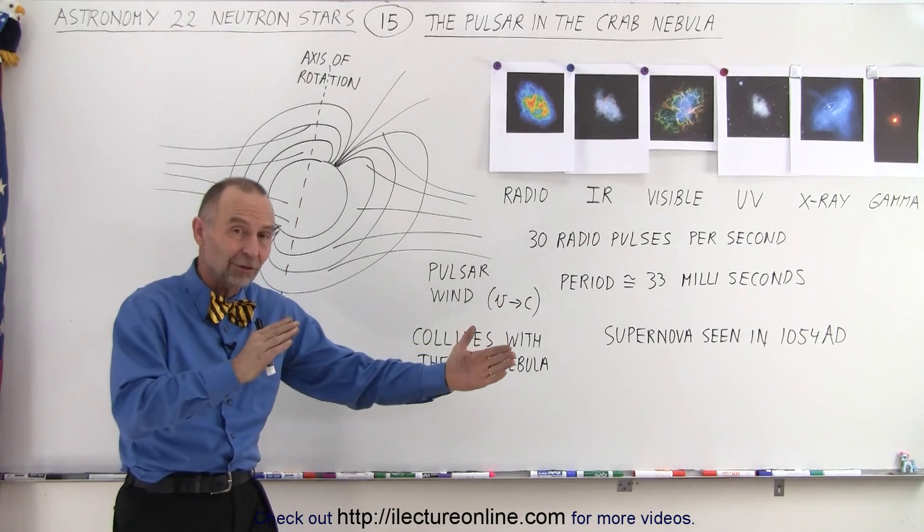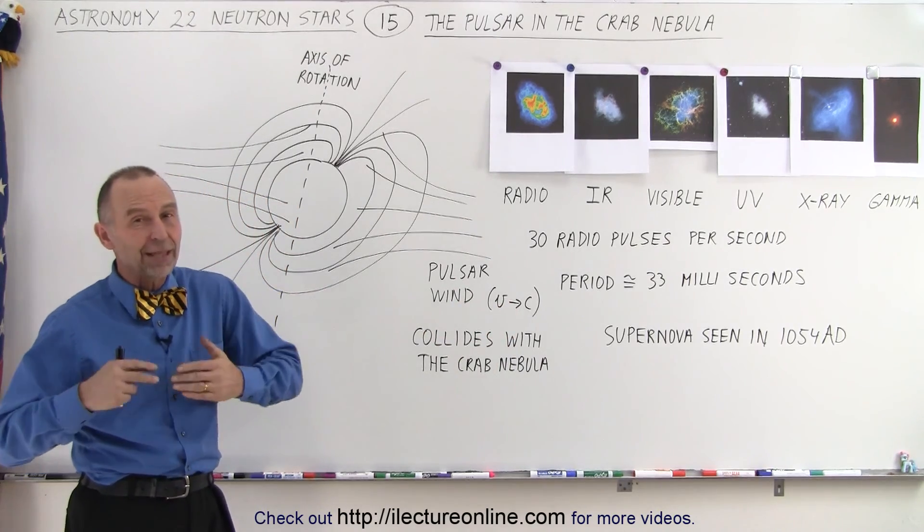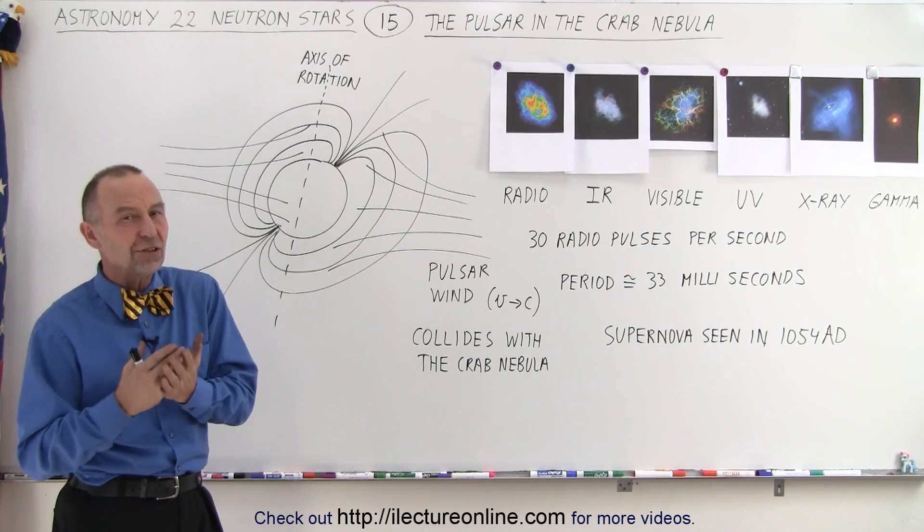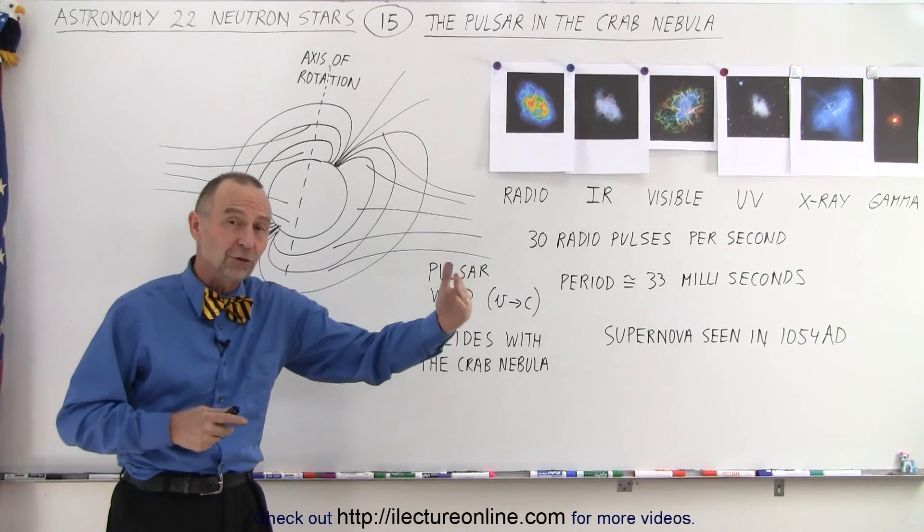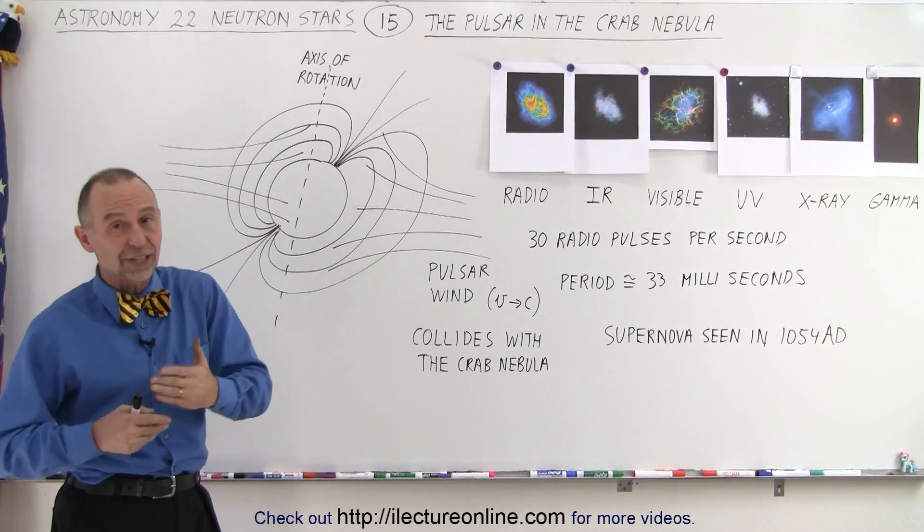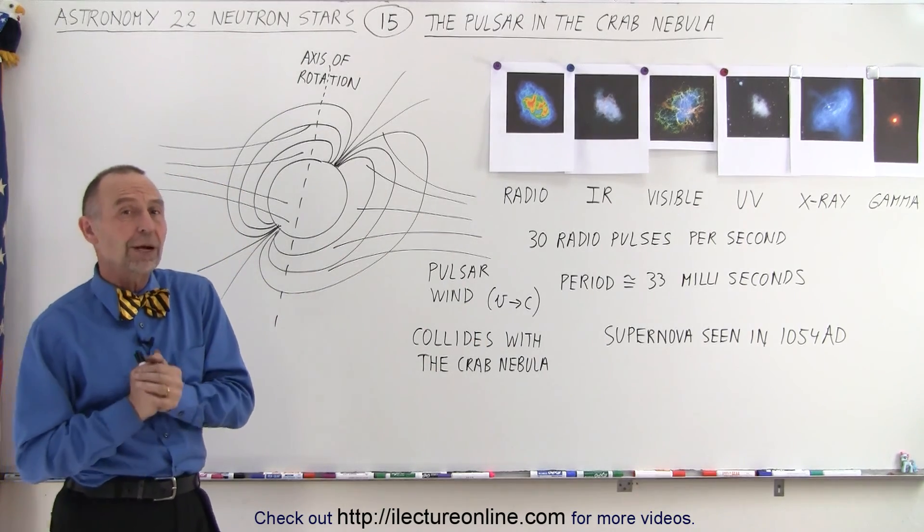So if you add 6,000 years plus about a thousand years, that meant that this happened about 7,000 years ago, and it took 6,000 years for the light of the supernova to reach Earth, which it did in 1054 AD.